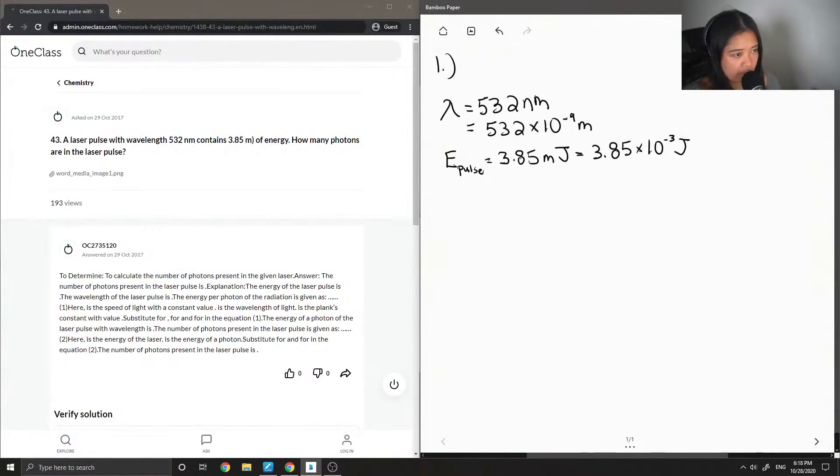We know the wavelength. This is a two-part question because first we're going to calculate the energy of a single photon. This energy is different than the energy of the laser pulse because the question asks how many photons are in the laser pulse. So first we'll figure out how much energy is in a single photon.